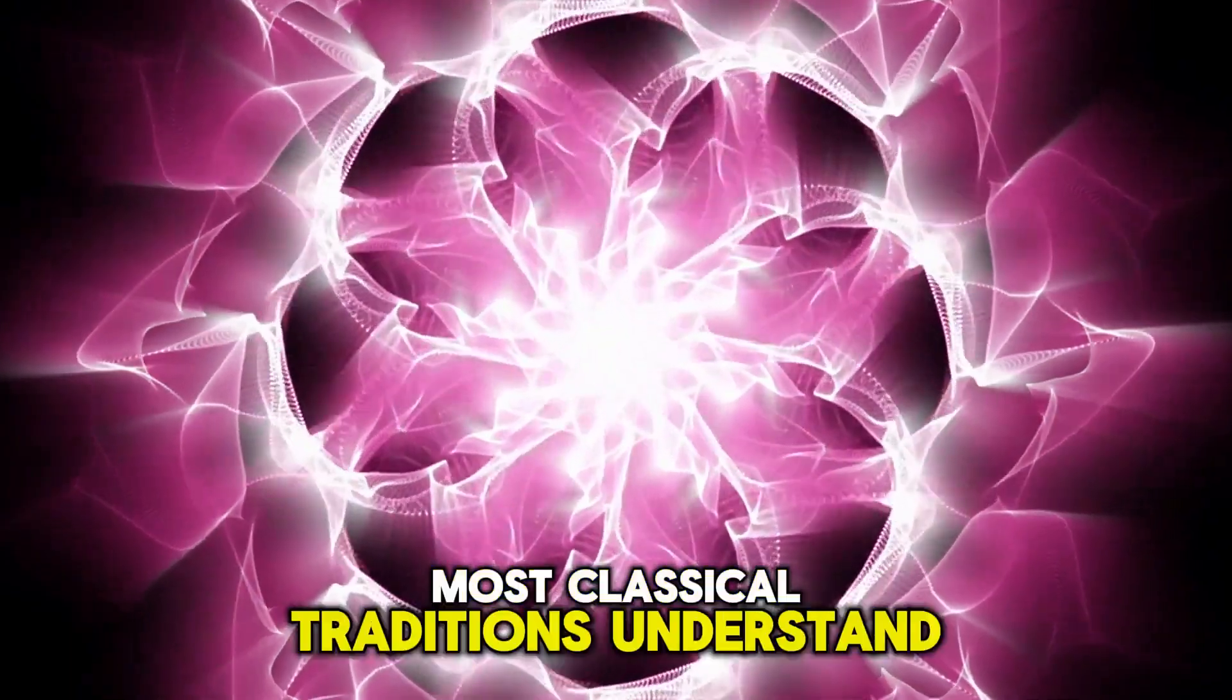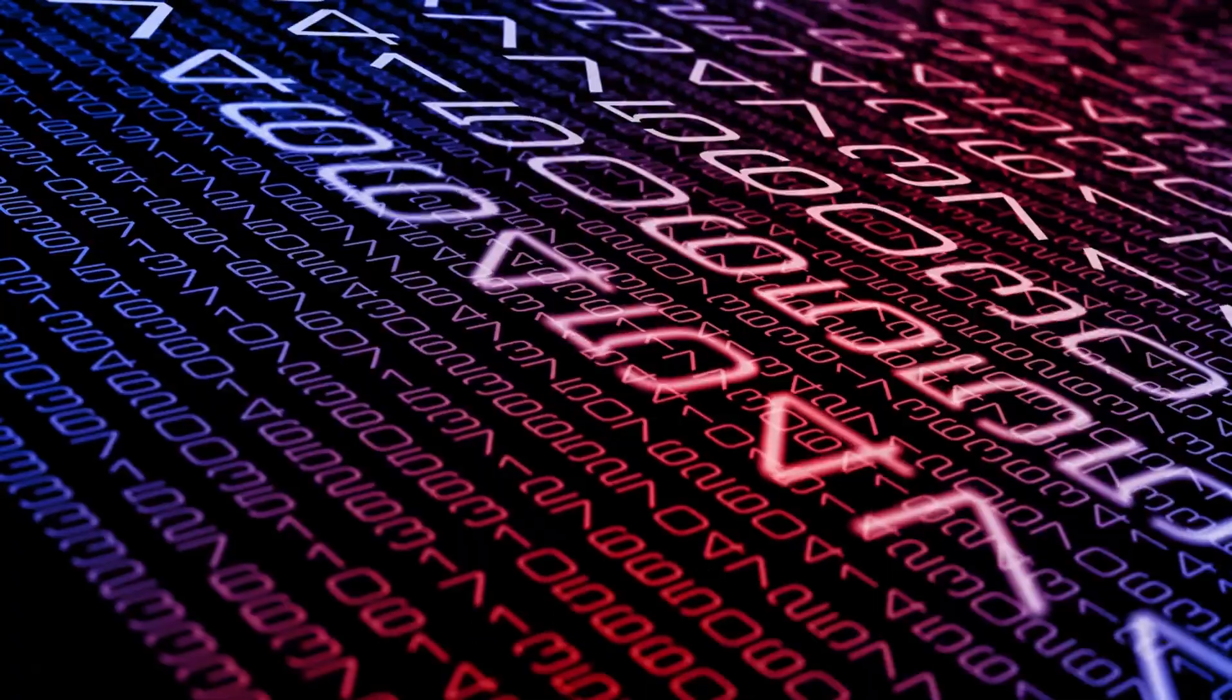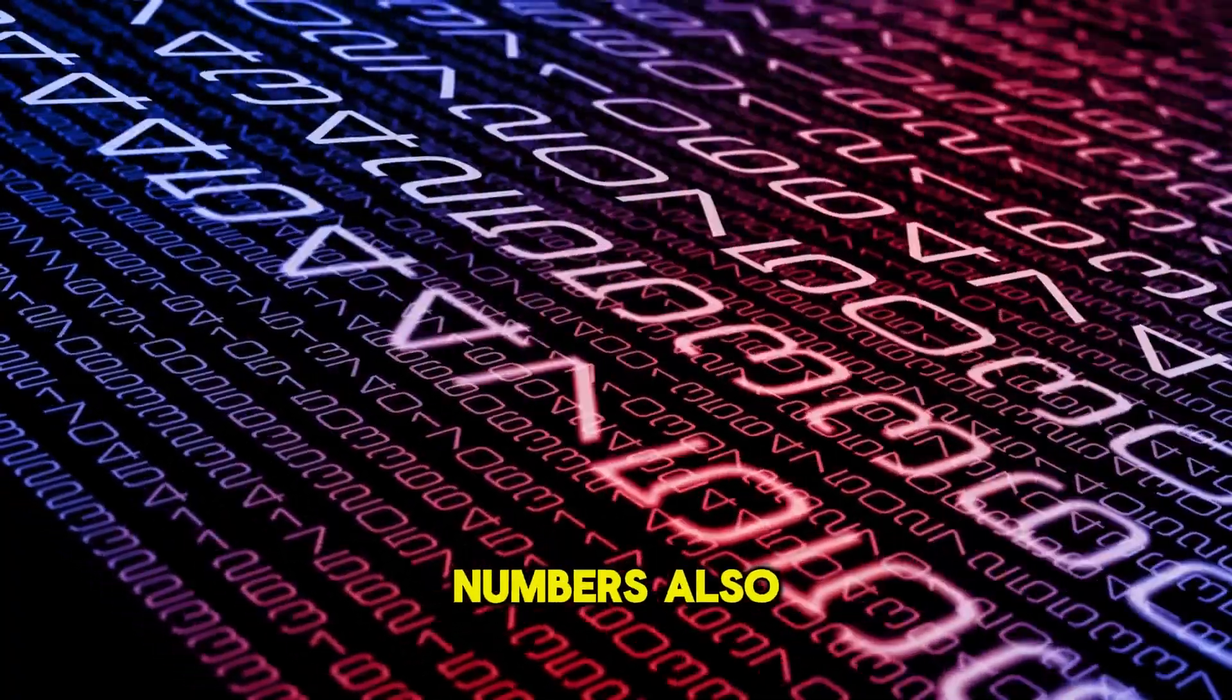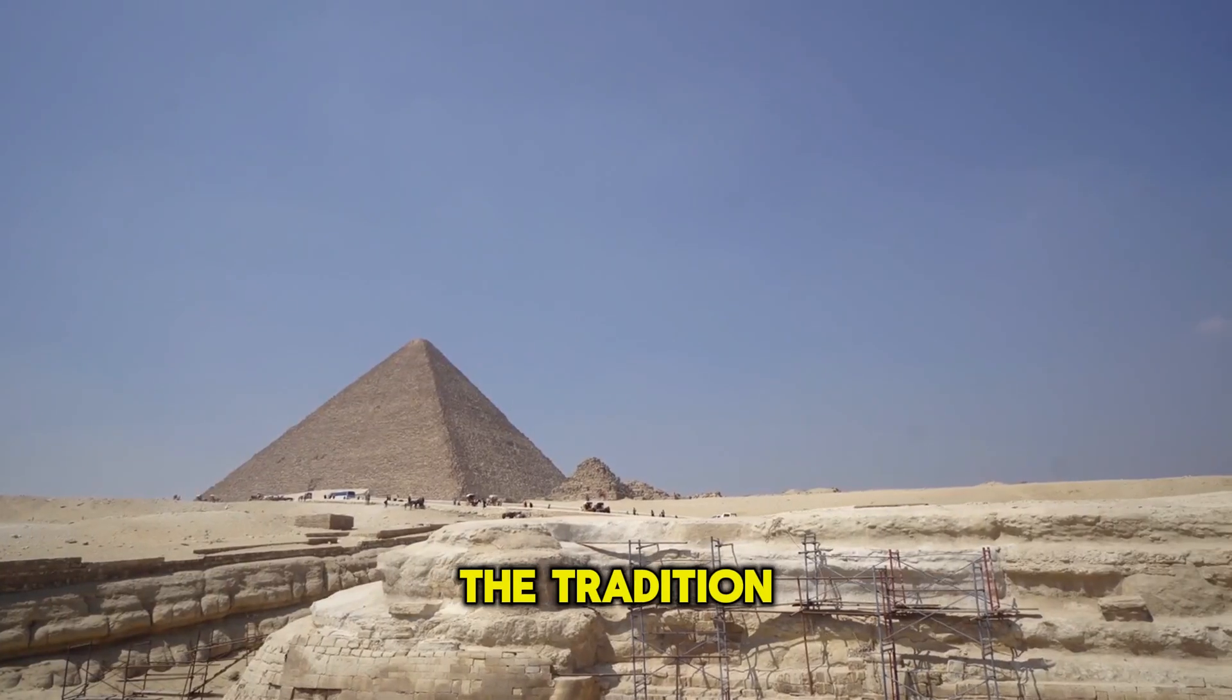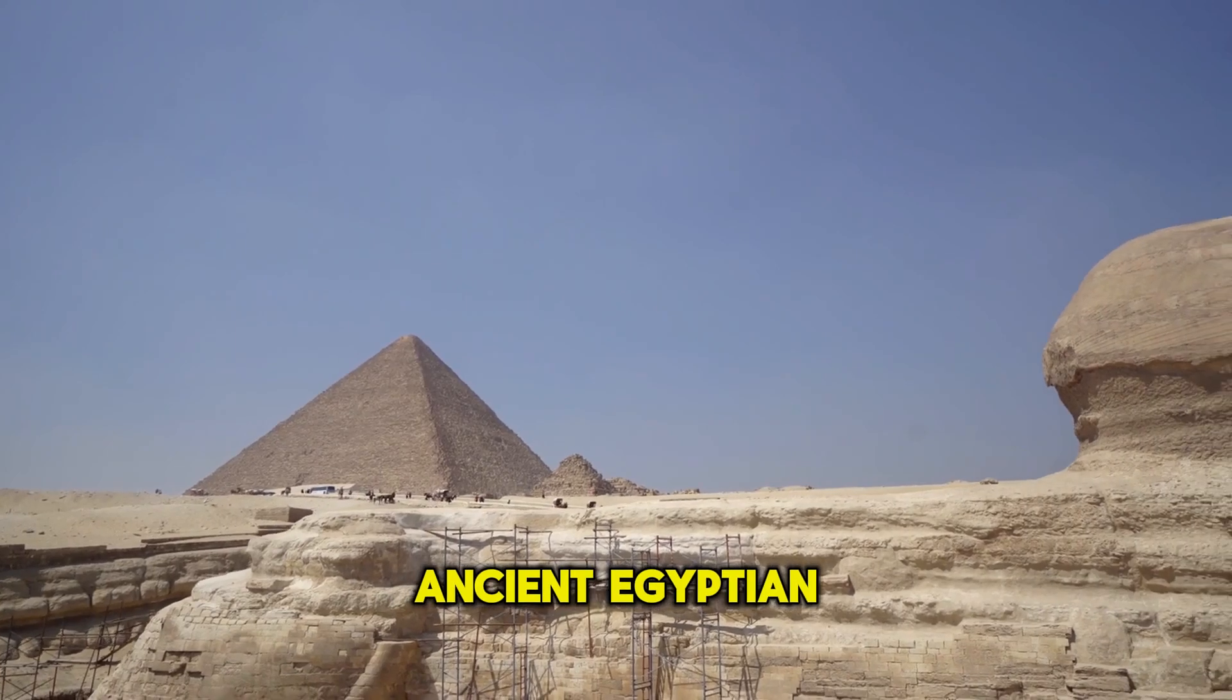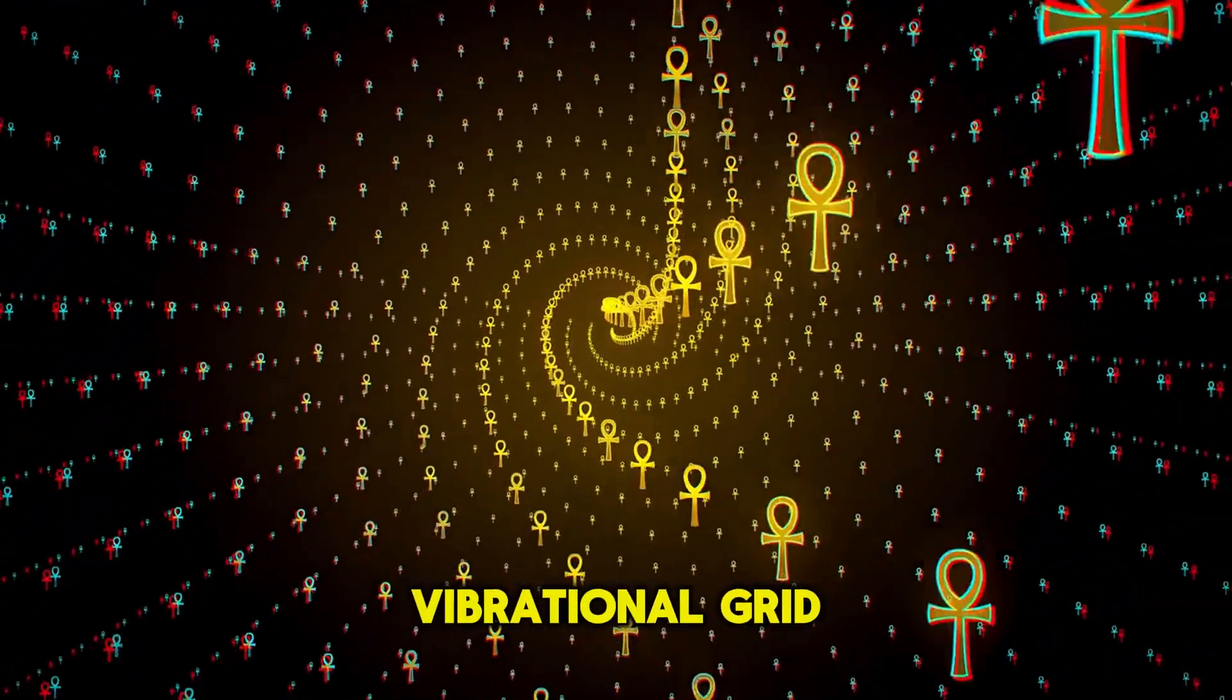Most classical traditions understand not only sacred geometry, but also sacred numerology. This simply means that just as the shape has power, numbers also have powers. The tradition that really understood the power of the number 19 was the ancient Egyptian civilization, and this was part of their 19-level vibrational grid.